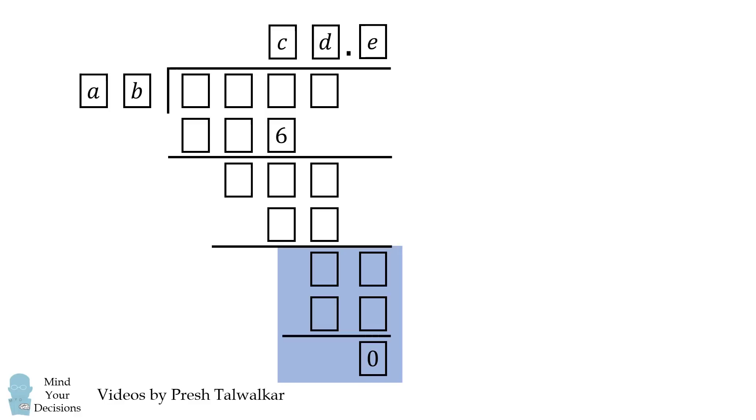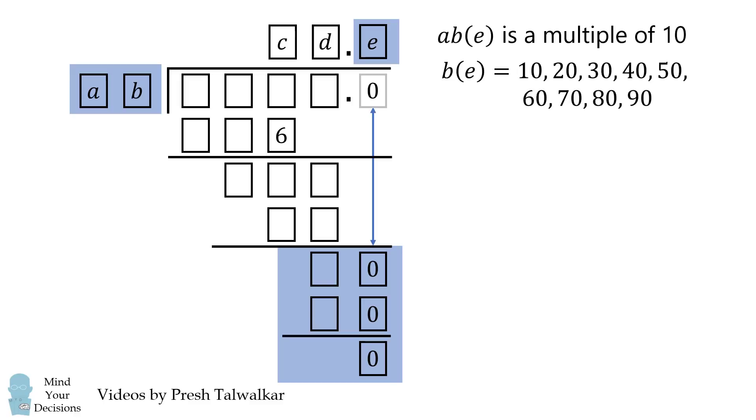We'll actually approach this problem from the very end. In the very end, this column is one decimal point after the original four-digit number, so it must be the result of carrying down a zero. Since the final result is zero, we must have a zero in both of the units column. Now, this final step is the result of multiplying AB by E.